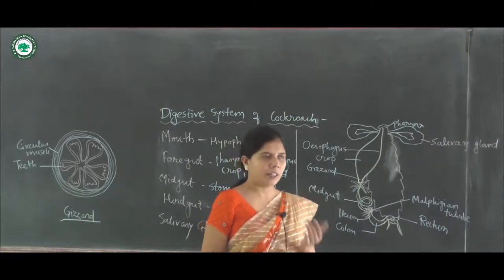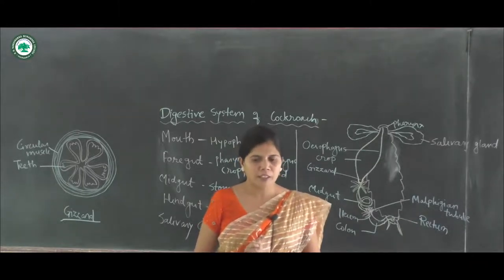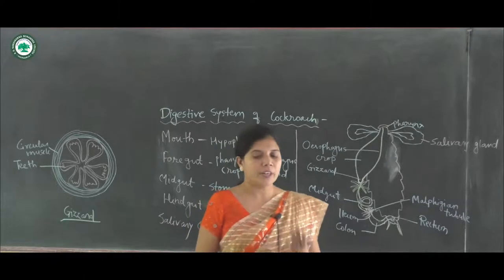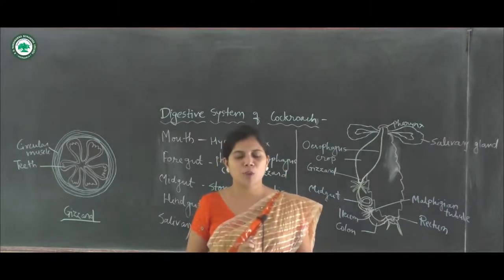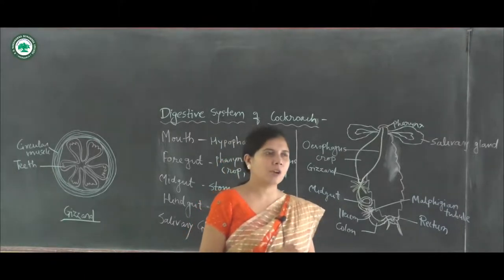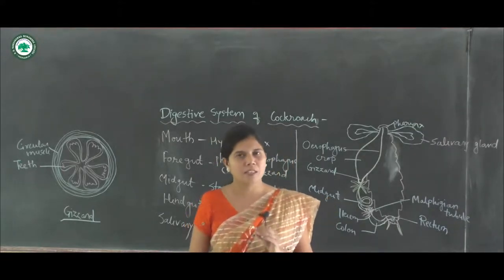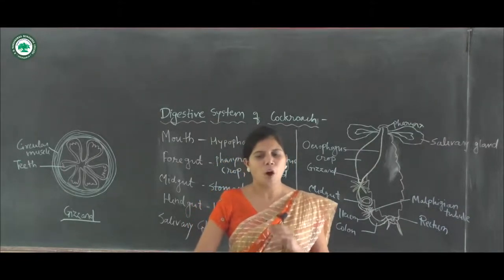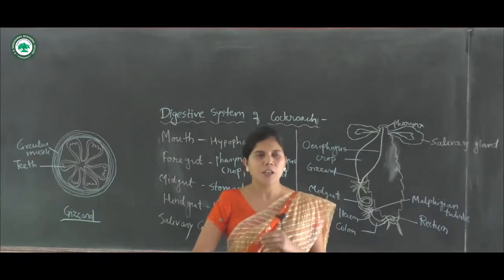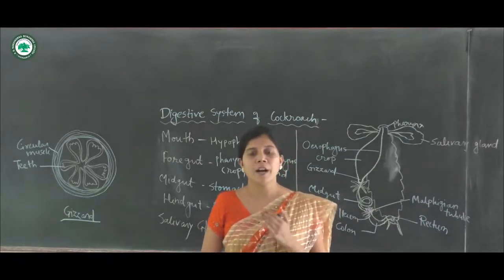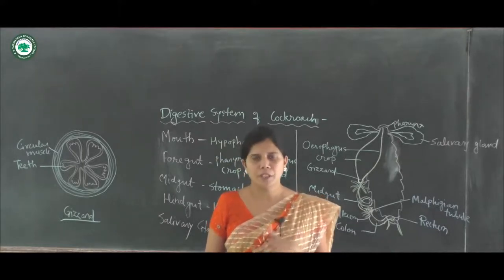The rectum opens outside by the anus. The anus of the cockroach is present on the ventral side of the 10th segment. It is the last posterior opening of the digestive system and gives out undigested food or undigested material from the body.